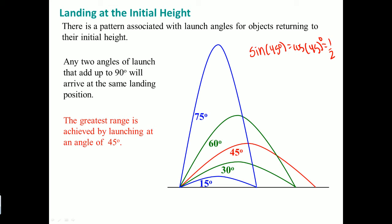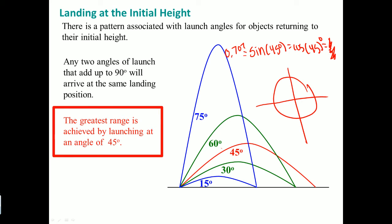Let me verify on the calculator — sine of 45 degrees equals cosine of 45 degrees, both equal approximately 0.707, which is the square root of two over two. To summarize for the AP exam: the greatest range is achieved by launching at 45 degrees, and the maximum height is achieved by launching at 90 degrees, meaning straight up.